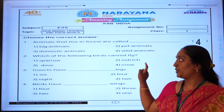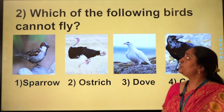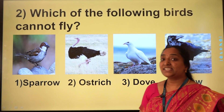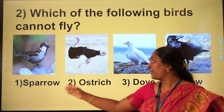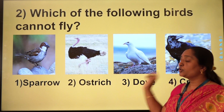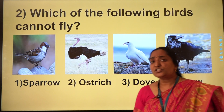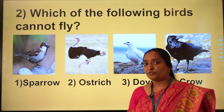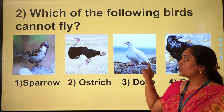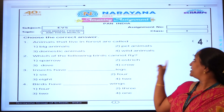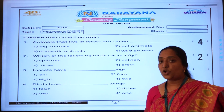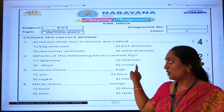Now let us see the second question. Which of the following birds cannot fly? Here we can see sparrow, ostrich, dove, and crow. Which is a huge bird over here? It is ostrich. So the correct option which cannot fly is option number 2, which is ostrich.